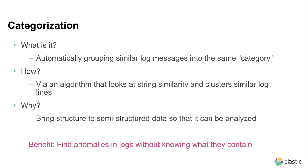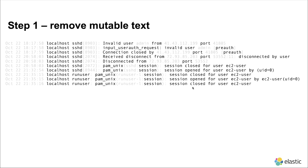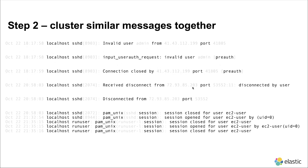Let's look at an example. Here I have a log file from a Linux system. How would categorization work on this? The first step is that machine learning would take and remove what I'll call mutable text from the messages — this is text that's likely to change, like IP addresses and timestamps. Ultimately we want to filter those out and then move on to step 2, which is to cluster those similar messages together.